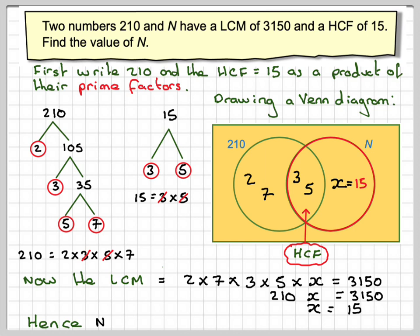And then hence N will be three times five, everything's in this red circle here, times 15, which will make 450. So the other number was 450.